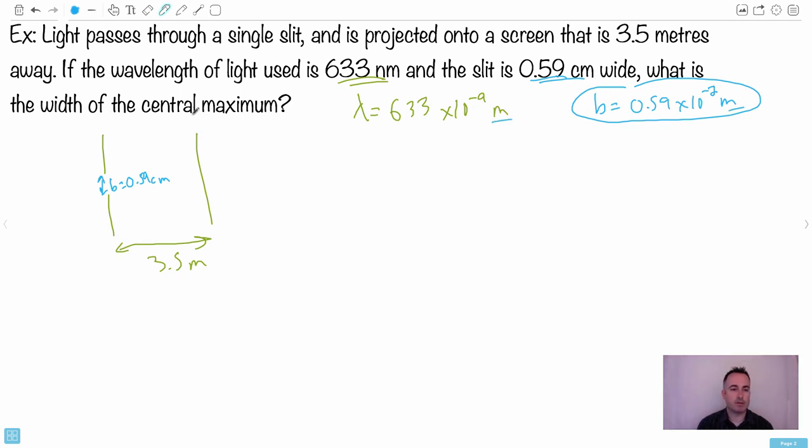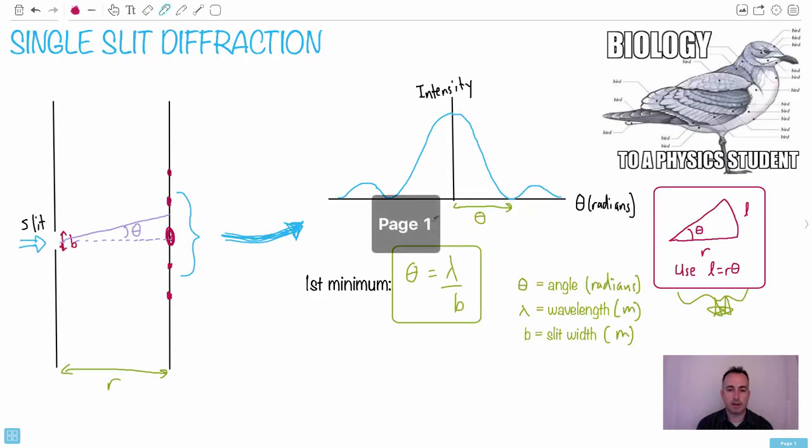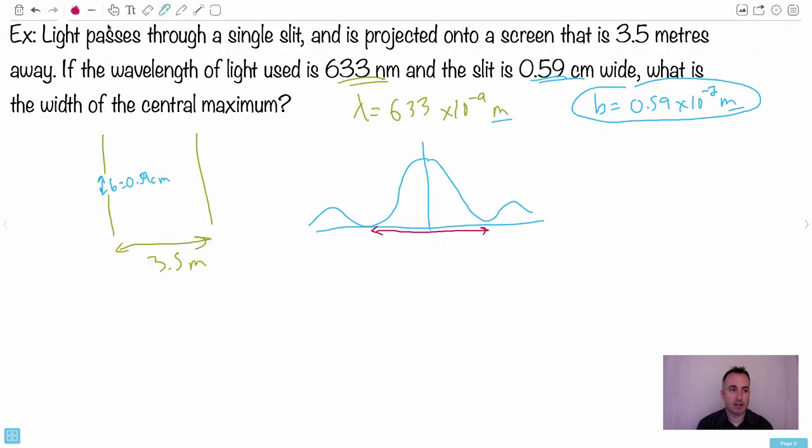So now we got everything in meters and meters. So now we're ready for it. We want the width of the central maximum. We know that equation right here, this theta equals lambda over B - that's for the first minimum. That's the angle to get to the first minimum. So let's try to find that angle theta, because theta is lambda over B, which is 633 times 10 to the minus 9 meters over B, which is 0.59 times 10 to the minus 2 meters. I use my calculator - I do 633 times 10 to the minus 9 divided by 0.59 times 10 to the minus 2.